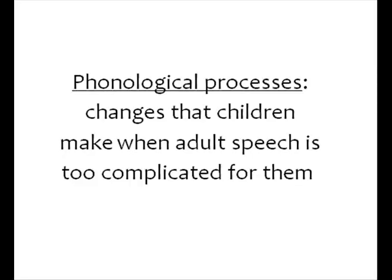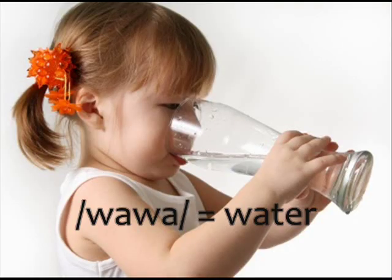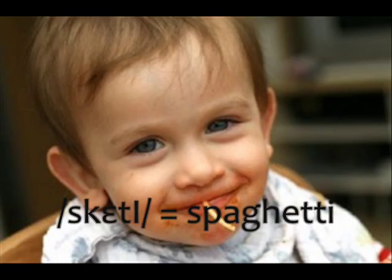Phonological Processes are the patterns that all young children use to simplify adult speech when it's too complicated for them. For example, I'm sure you've heard a young child say 'wawa' instead of water, or 'skedi' instead of spaghetti. When children make these changes, they're not random — they're based on rules that the child makes and applies to many different words and phrases. As children mature, they usually stop using these patterns and their speech becomes more adult-like and understandable.